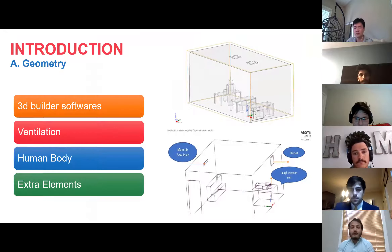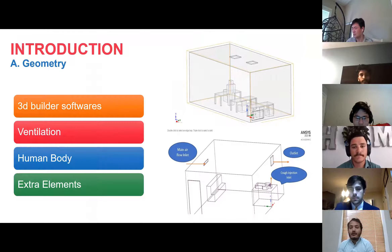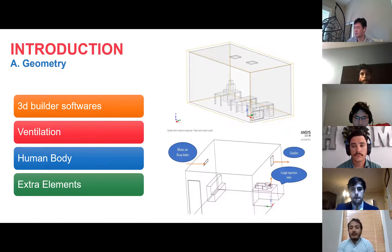Our senior design project can be divided into two parts. The first is the creation of the geometry. Different 3D builder software like ANSYS SpaceClaim, Fusion 360, and AutoCAD were used for the creation of both the hospital room and classroom model. It was very important to have ventilation inlets and outlets for the simulation. For the injection of the virus, we also created a human body, and to show similarity to the real world, we created several elements like chairs, desks, a sofa, and a bed in the hospital room.